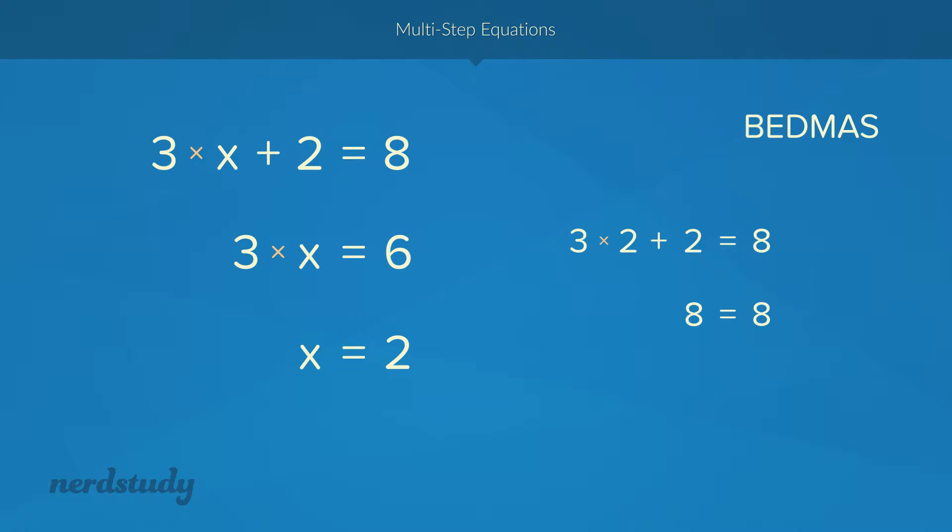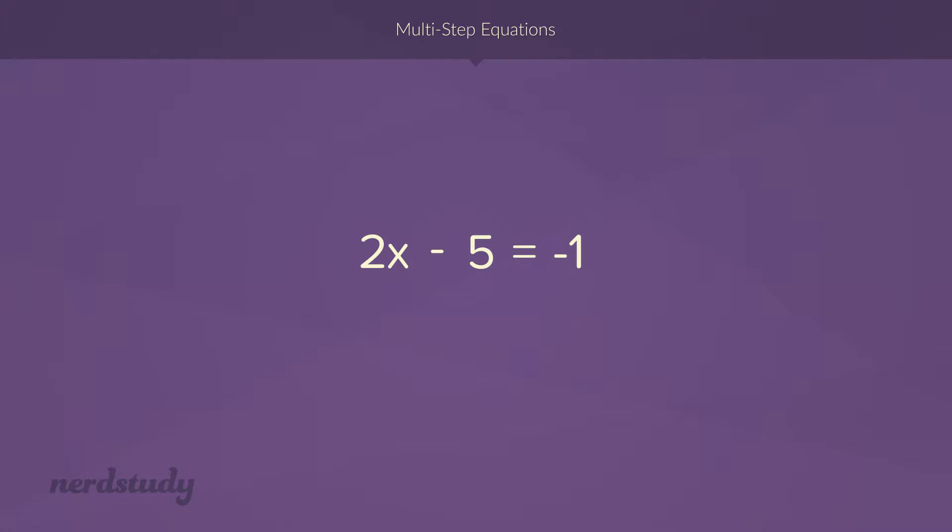Let's try to solve another equation. In this example, we have a multiplication of 2 and a subtraction of 5. Since we're going in a reverse BEDMAS order, let's deal with this first. We get rid of it by adding 5 to both sides. And finally, we will divide both sides by 2 and we get our final answer.